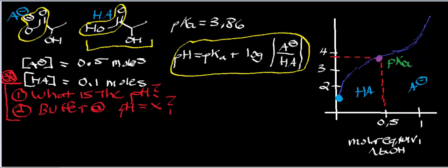The ionizable proton is the one on the carboxylic acid. When this carboxylic acid gets deprotonated, it's going to form the carboxylate form, which is called lactate. I've abbreviated this lactate as A-, and the acid form, lactic acid, is HA. In this particular problem, we're going to have a conjugate acid concentration of 0.1 moles and a conjugate base concentration of 0.5 moles.